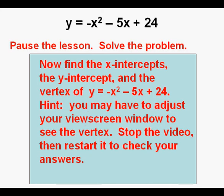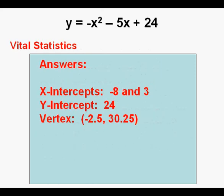One last problem: find the x-intercepts, y-intercept, and vertex of y equals negative x squared minus 5x plus 24. Hint: you may have to adjust your view screen window to see the vertex — you can do that using the window key. Stop the video, then restart to check your answers. The x-intercepts are negative 8 and 3, the y-intercept is 24, and the vertex is a maximum at (−2.5, 30.25).